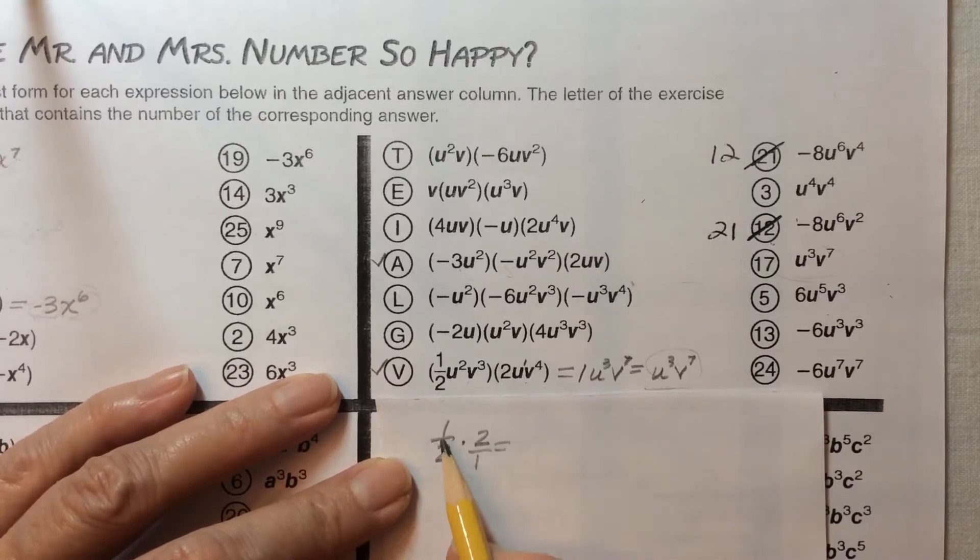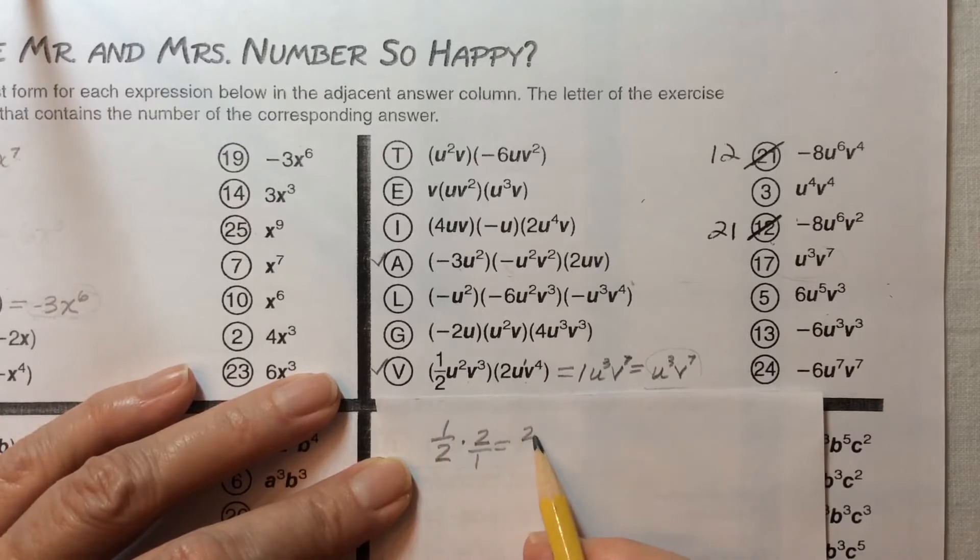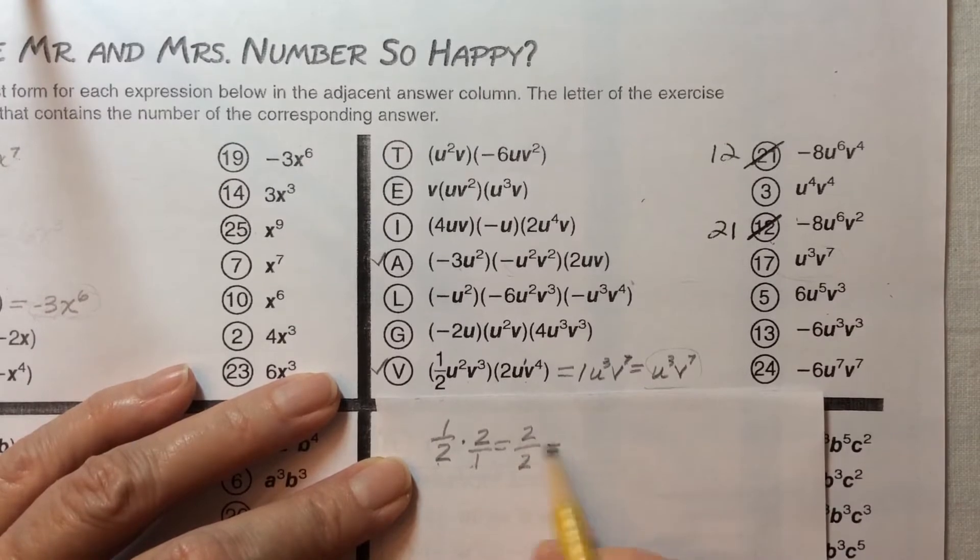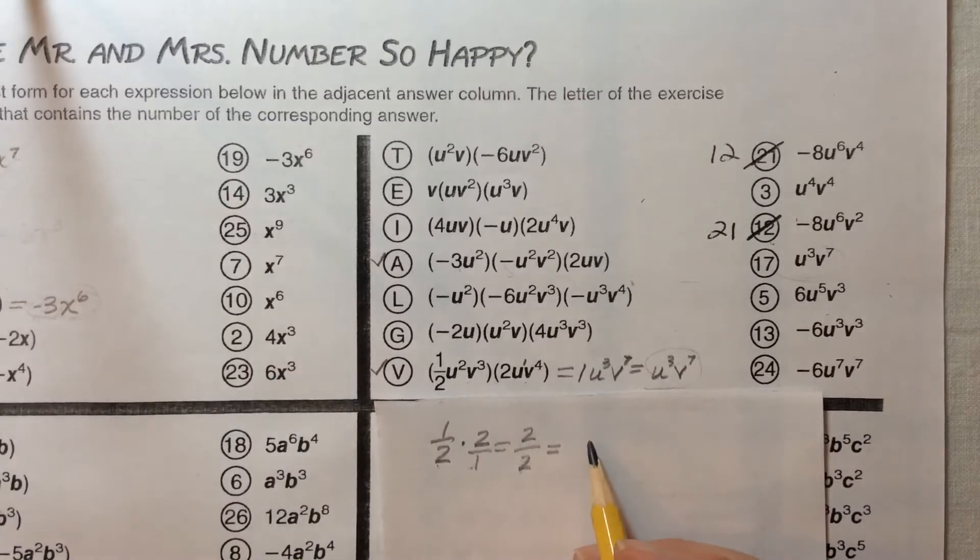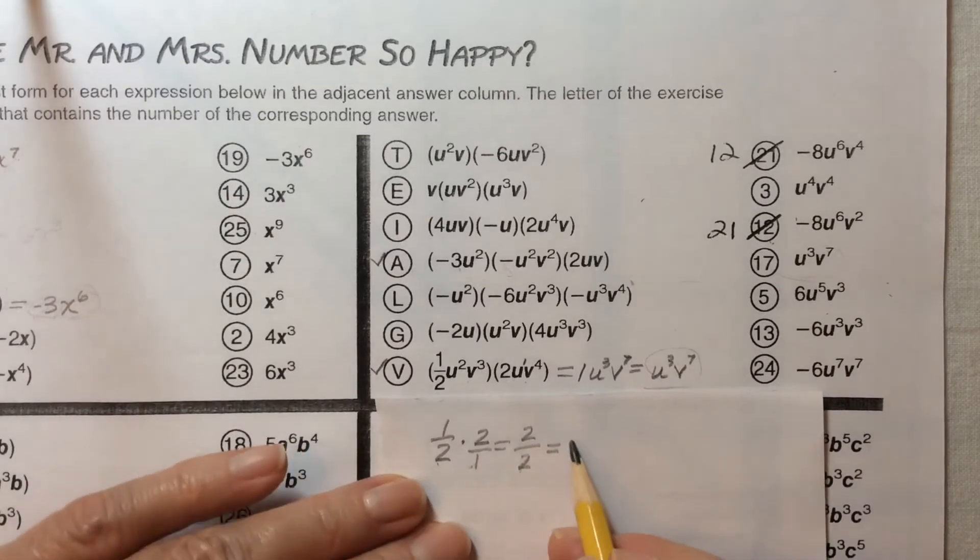So then if we multiply across, 1 times 2 is 2, 2 times 1 is 2. So what we get here by multiplying 2 and 1/2 is 2/2 and that is equal to 1.